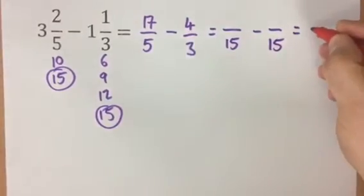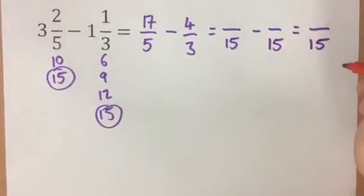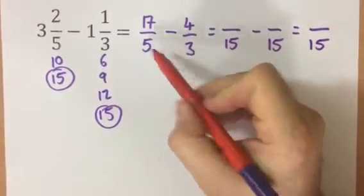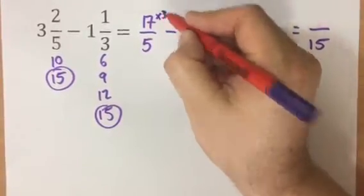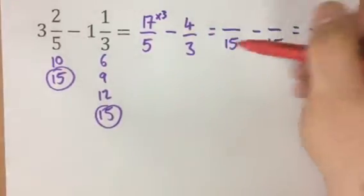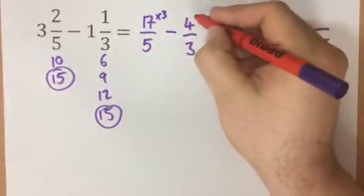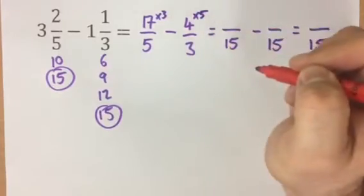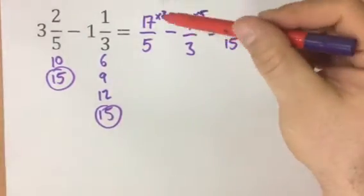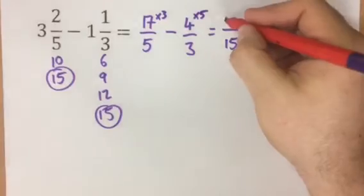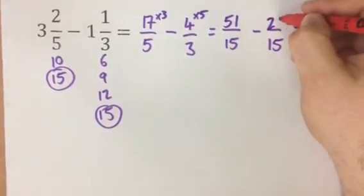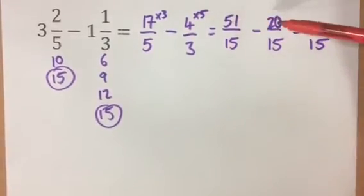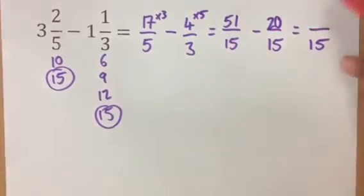Which is also going to give us an answer out of 15. To change a 5 into a 15, we multiply by 3, so we need to multiply the top of that by 3. To change a 3 into a 15, we need to multiply it by 5, so we need to multiply the top by 5. 3 lots of 17 is 51, 4 lots of 5 is 20, and now you just subtract the top 2 numbers. So 51 take away 20 leaves 31.